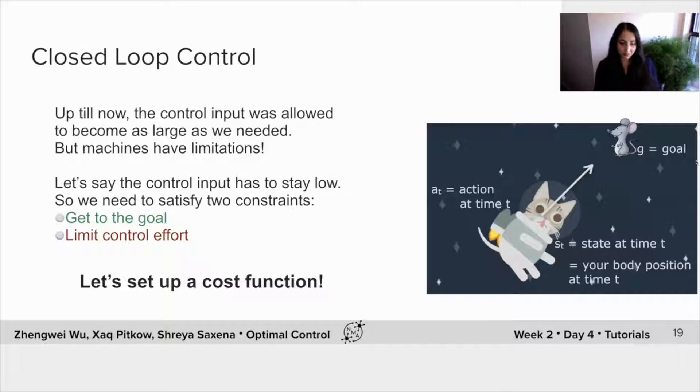Now, you can imagine or you may have tried it out if you have an initial condition that starts very far away, and you still want to get to the goal in one time step, you may want to just apply a very large action in order to do that. That would in fact be your optimal action, given what we have just seen up till now.